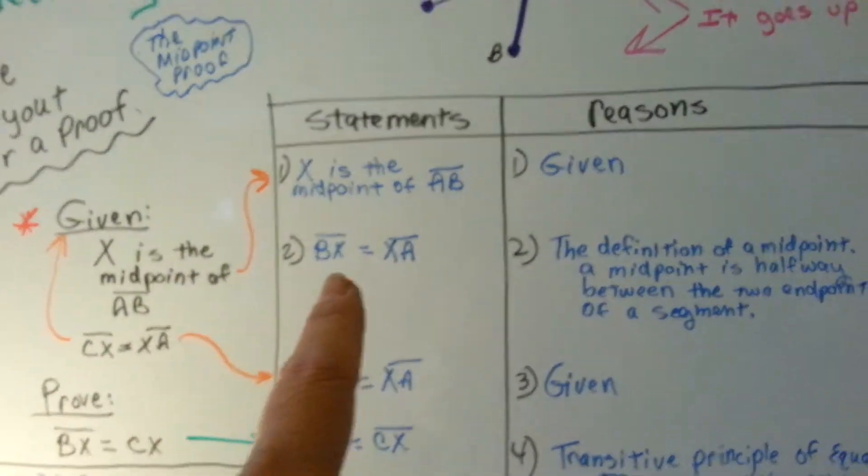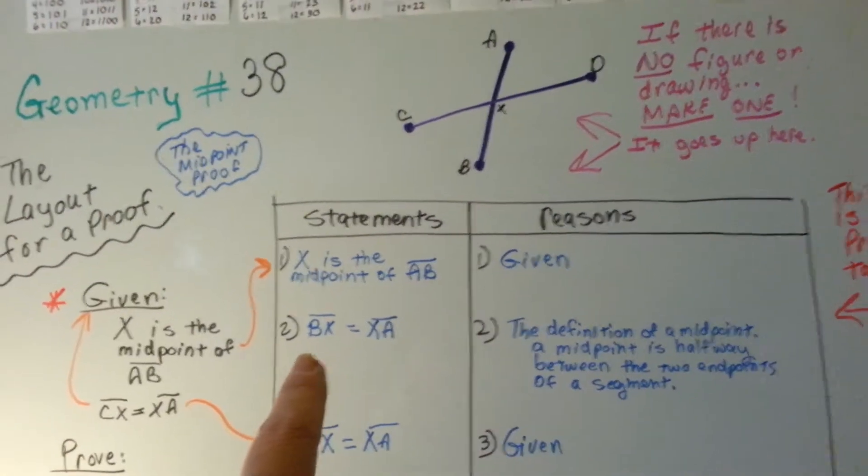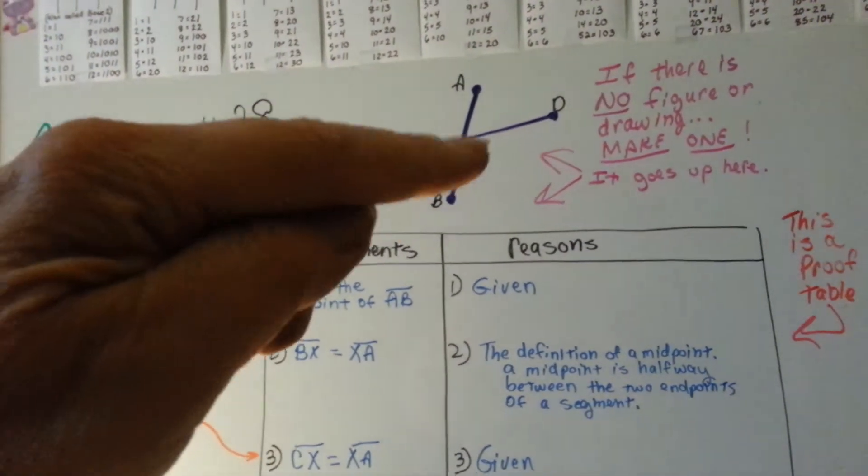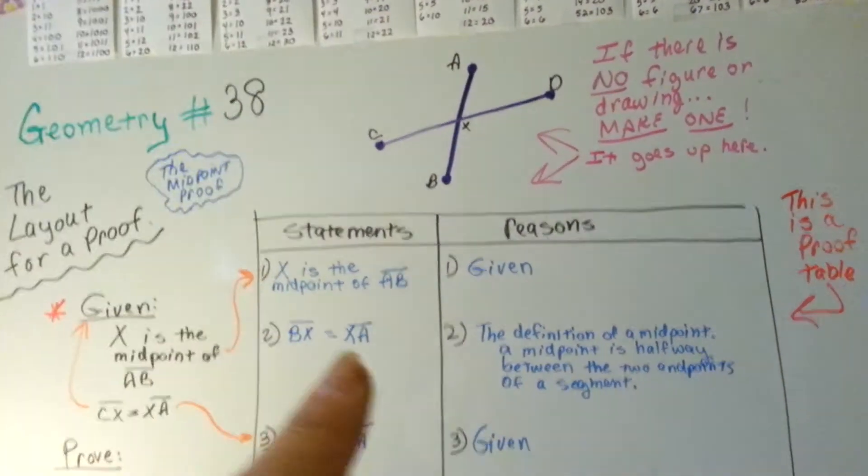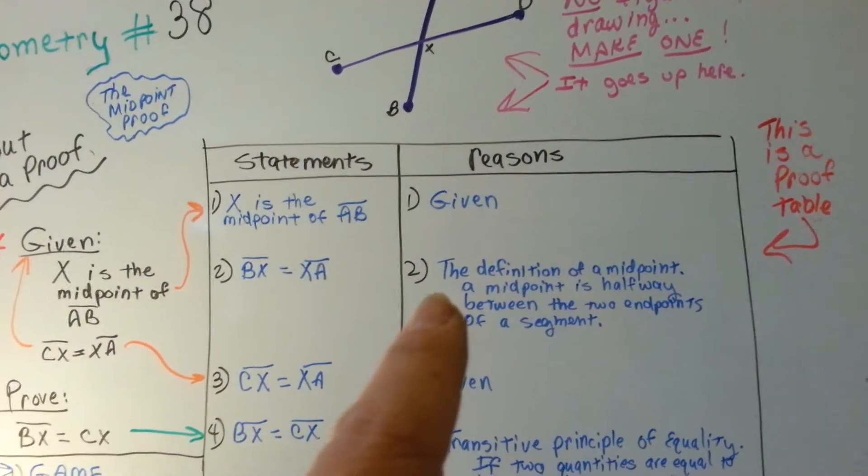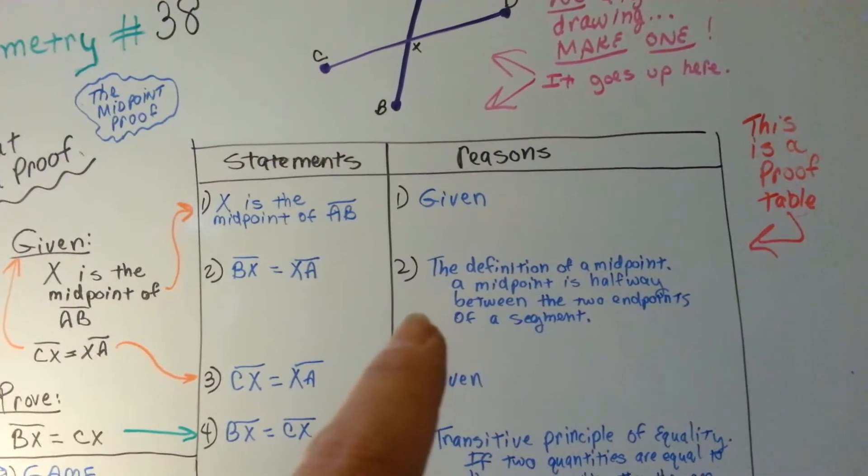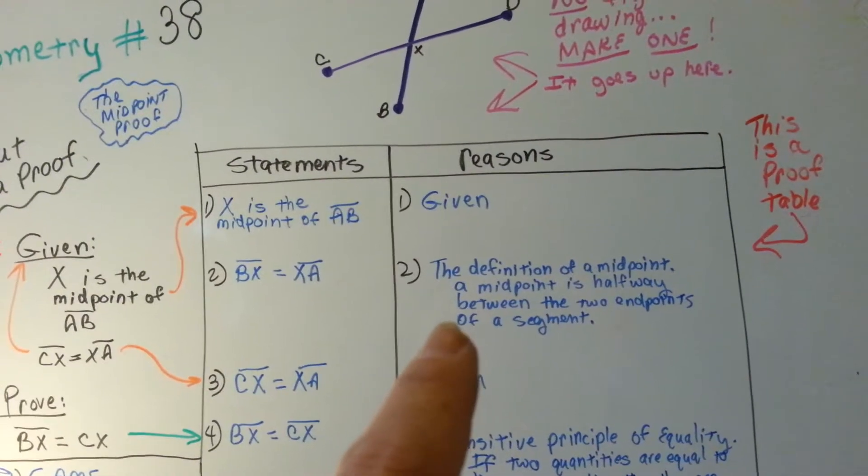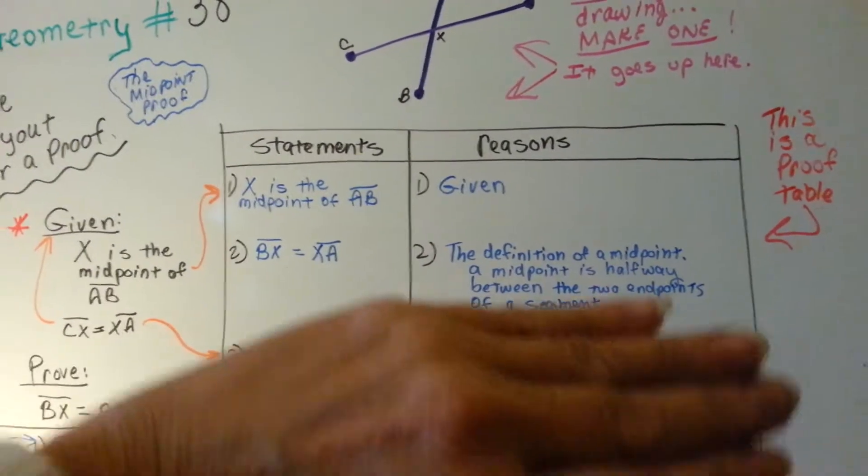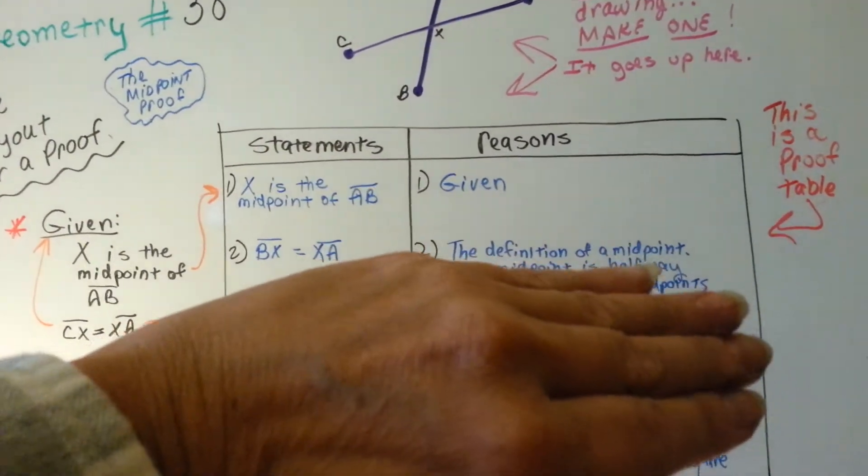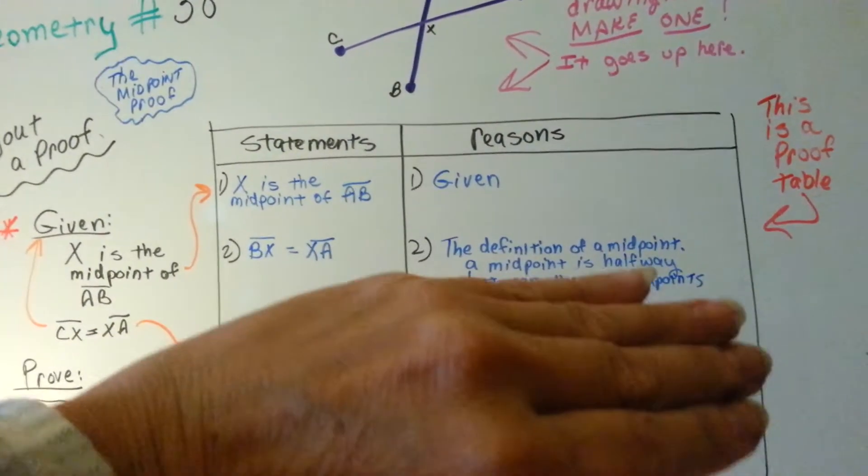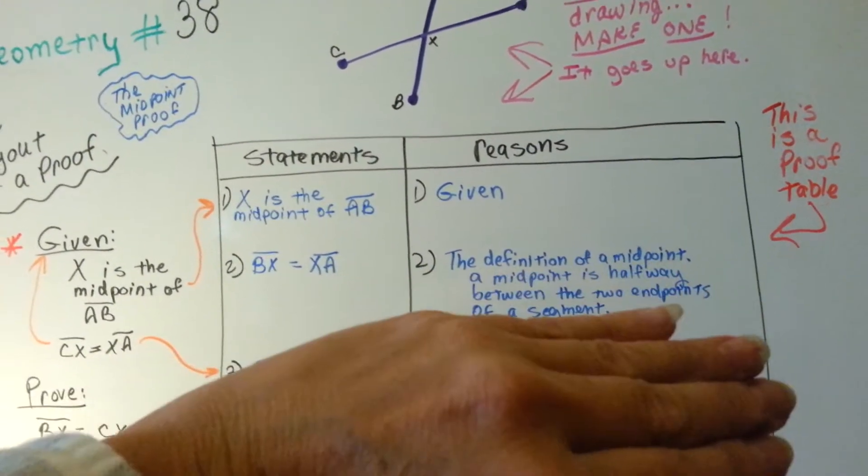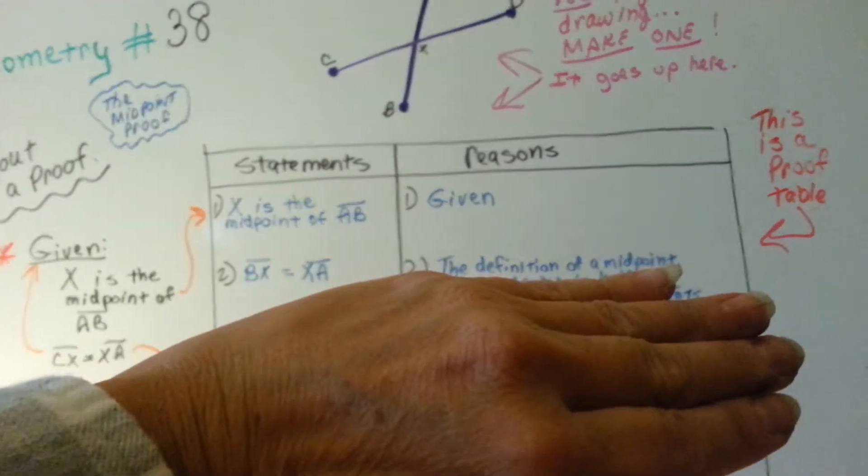The second thing is that segment Bx is equal to Ax. Bx is equal to Ax. Our reason is the definition of a midpoint. A midpoint is halfway between the two endpoints of a segment. Now, when you're doing your reasons, you could just put definition of a midpoint and that would be accepted. I went into detail here so that you would understand, but you could just put that.